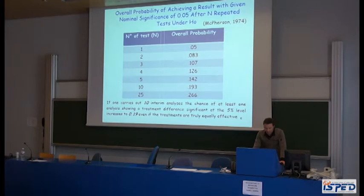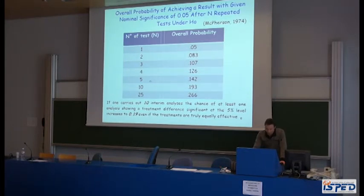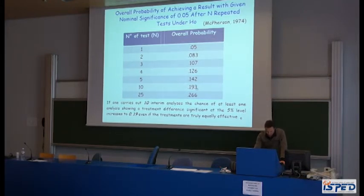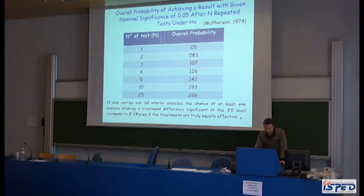Assuming k analyses are performed at the alpha 5% level, the overall type 1 error is much higher than 0.05. For instance, with 5 analyses performed without adjustment for multiplicity, the overall type 1 error is 0.14, and for 10 analyses it increases to 0.193. In conclusion, the more analyses carried out at the same alpha level, the more the type 1 error increases. It is therefore important to use adequate methodology to preserve the overall type 1 error.